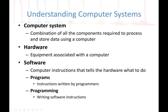Next is hardware. Hardware is equipment that is associated with a computer. Examples would be the computer hard drive, the memory, and the monitor. Computer hardware is any physical component of the computer. Computer software will be the program instructions that tell the hardware what to do.